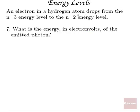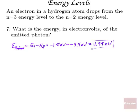Number seven, an electron in a hydrogen atom drops from the n equals 3 energy level to the n equals 2 energy level. What's the energy in electron volts of the emitted photon? So we're going to need the hydrogen energy level diagram here. The energy of our photon is the initial minus the final energy level, which is negative 1.51 eV at the n equals 3, and it's negative 3.4 eV at the n equals 2. So that's going to give us 1.89 electron volts.